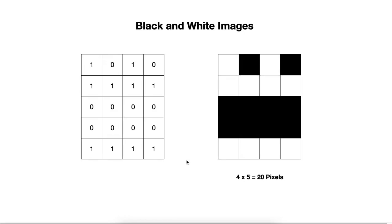Welcome again. In this lecture, we will talk about images, how they are saved, and how OpenCV interacts with them. First, let's start with the most basic type of images, which are the black and white images. Images are usually presented in rows and columns. In this table here, we have some cells which are called pixels.